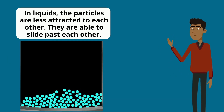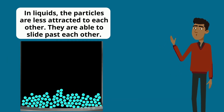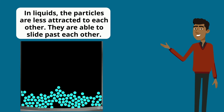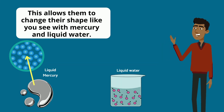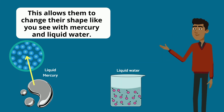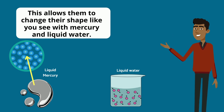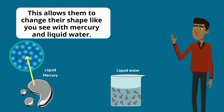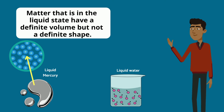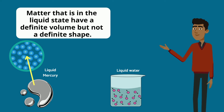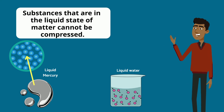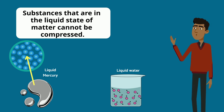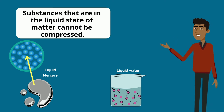In liquids, the particles are less attracted to each other. They are able to slide past each other. This allows them to change their shape, like you see with mercury and liquid water. Matter in the liquid state has a definite volume but not a definite shape. Substances in the liquid state of matter cannot be compressed.